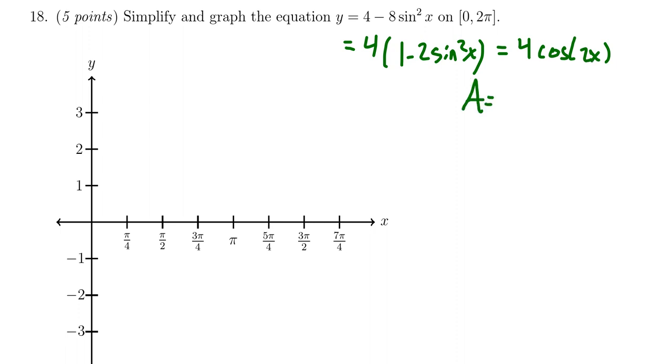We see that the amplitude of this cosine wave will be 4, and the coefficient b is 2, which means the period is 2π/2, which equals π.